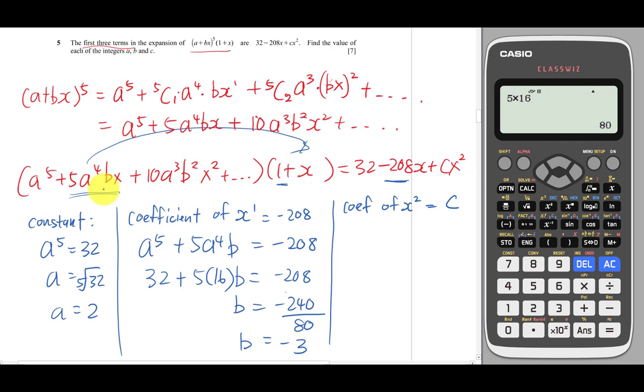This term times x gives x^3, so only two terms here: 5a^4·b times x, plus 10a^3·b^2 times 1, equals c. I have both a and b, so I can find c easily by substituting.